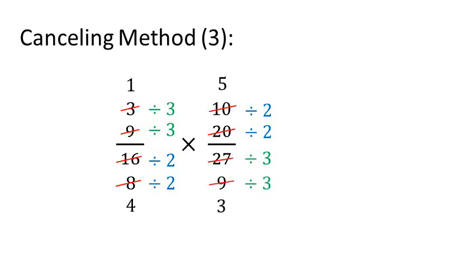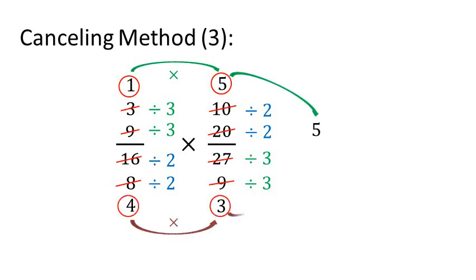Now multiply the numerators, 1 and 5, to get 5, and the denominators, 4 times 3, to get 12. So the answer is 5 over 12.